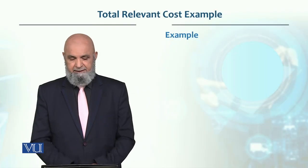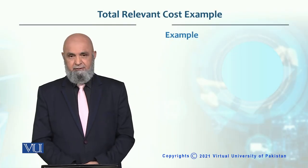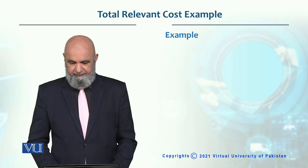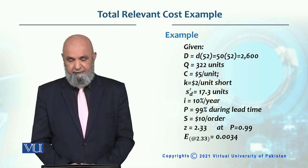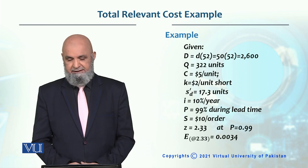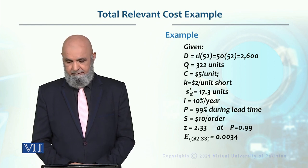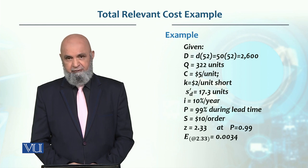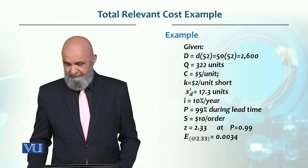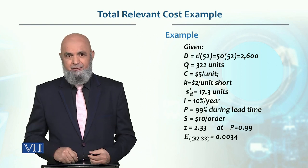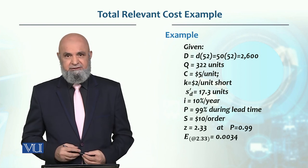Let's look at an example of total relevant cost. We have these values given: weekly demand is 50 units. We've converted this into annual demand because if we have weekly demand and use the EOQ model or related model, we need annual demand. So we multiply by 52 weeks and get 2,600 units annual demand.